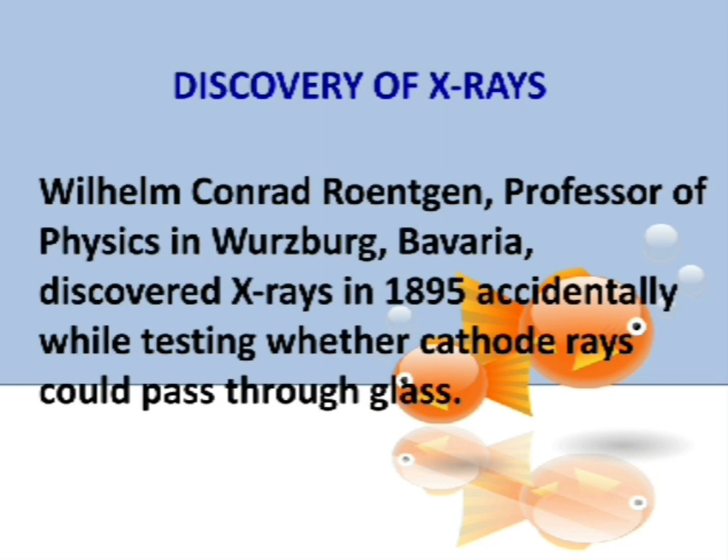X-rays were discovered by Wilhelm Conrad Röntgen, professor of physics in Würzburg, Bavaria. He was conducting research on cathode rays with the help of a Crookes tube, which led to the accidental discovery of X-rays.